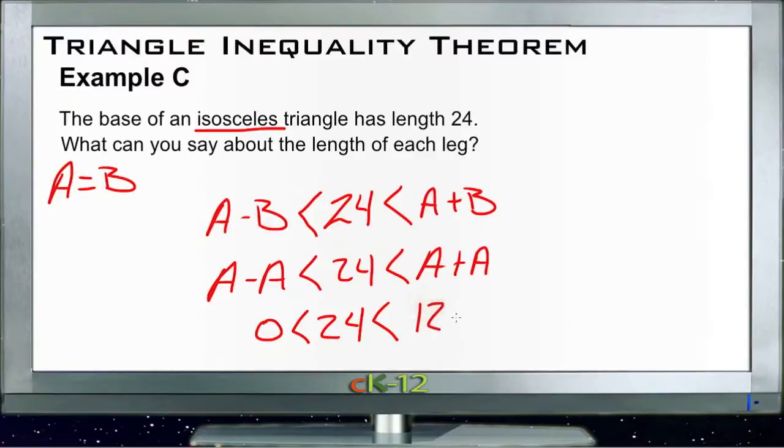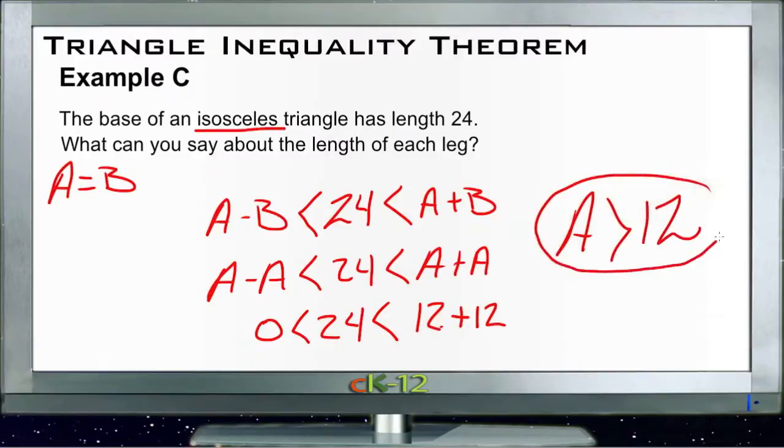24 is less than 12 plus 12 point something. So, A needs to be anything greater than 12. So, either of those two sides have to be at least 12. And they can be 12.000001, but they do need to be at least 12. They can't be 12, they have to be more than 12, but they can be anything bigger than that. So, we can say that the length of each leg is greater than 12 units. There we go.